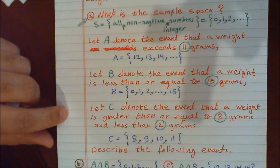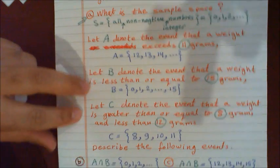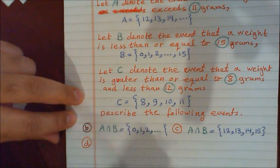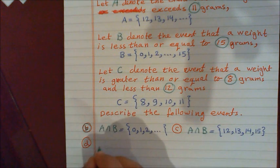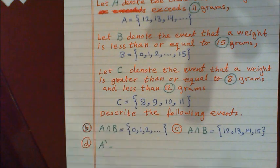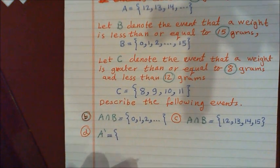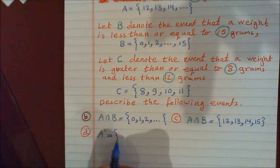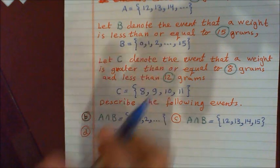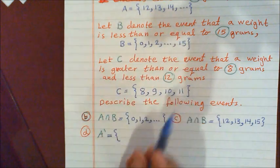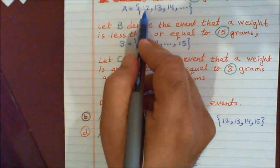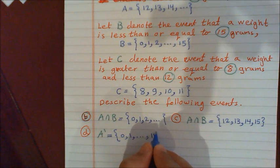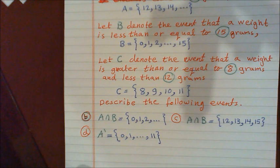Question D asks for A' — the complement of A. The complement contains all elements in the sample space except those in event A. Event A starts from 12 to infinity, so A' contains all elements from 0 up to, but not including, 12. Therefore A' = {0, 1, 2, ..., 11}.